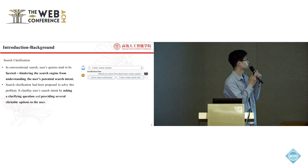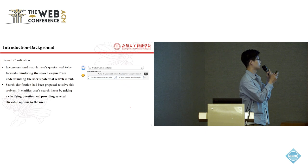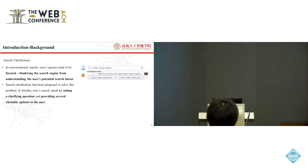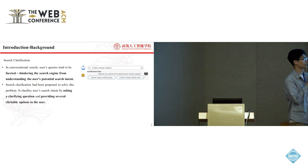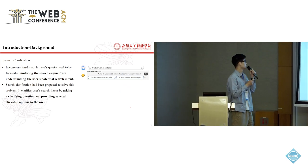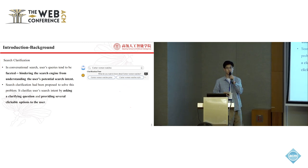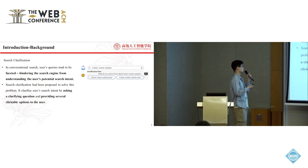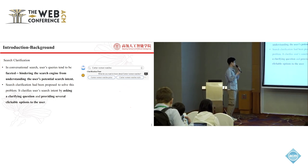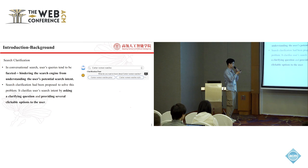We know that in conversational search, user queries tend to be faceted. For example, a user query 'Cartier Women Watches' may contain several facets such as 'Cartier Women Watches price' and 'Cartier Women Watches style.' This phenomenon hinders the search engine from understanding user's potential search intent. So search clarification has been proposed as a technique to solve this problem — it clarifies user search intent by asking a clarifying question and providing several clickable options to the user.